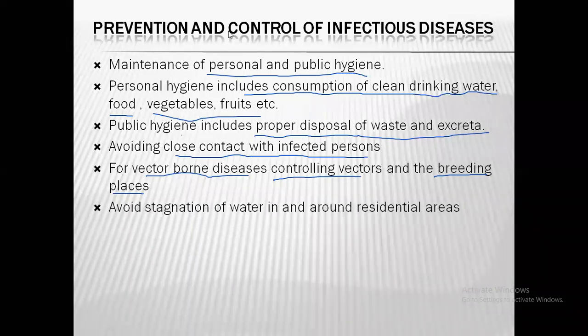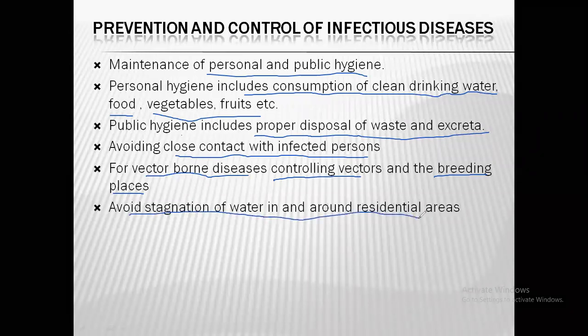One method is to avoid stagnant water in and around residential areas. Mosquitoes lay their eggs and produce larvae in stagnant water, so if water collects, these vectors can grow there. Clean out your environment of any kind of stagnant water. Flowing water is not a problem, as most mosquitoes do not lay their eggs in flowing water.